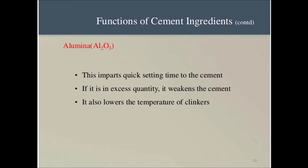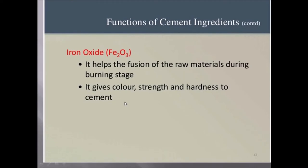Cement clinker is a solid material produced in the manufacture of Portland cement as an intermediary product. Iron oxide helps the fusion of raw materials during the burning stage — we will come into this in detail when we study about the manufacturing process of cement. It also gives color, strength and hardness to cement.